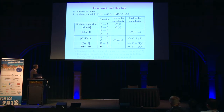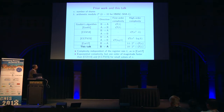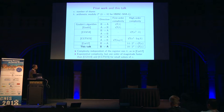Last year, I described a high-order Boolean-to-arithmetic conversion algorithm where the complexity is independent of K but exponential in the number of shares N. In practice, for small values of N, the running time is actually much faster than previous work, so it is only interesting for small values of N.